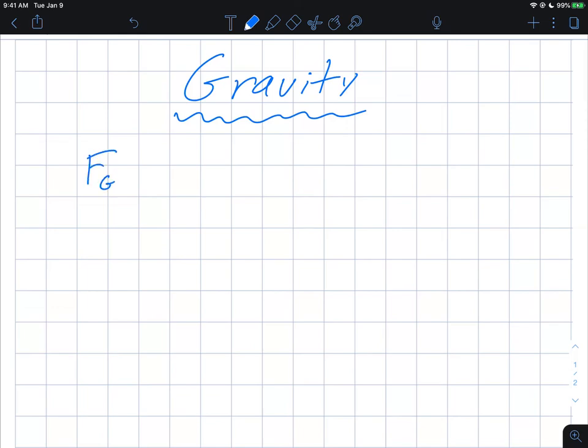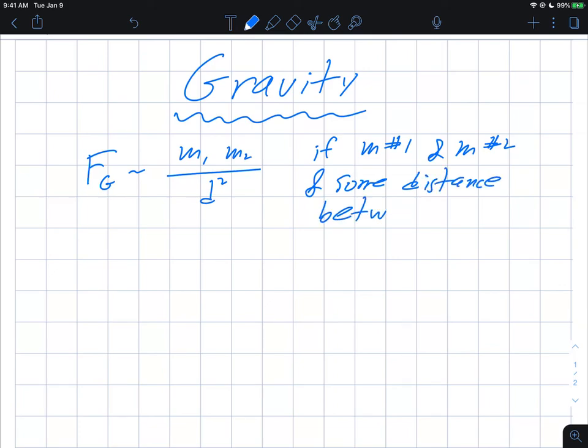First of all, the force of gravity always behaves like mass one times mass two over distance squared. So what it means is if you have mass number one and mass number two, and some distance between them,